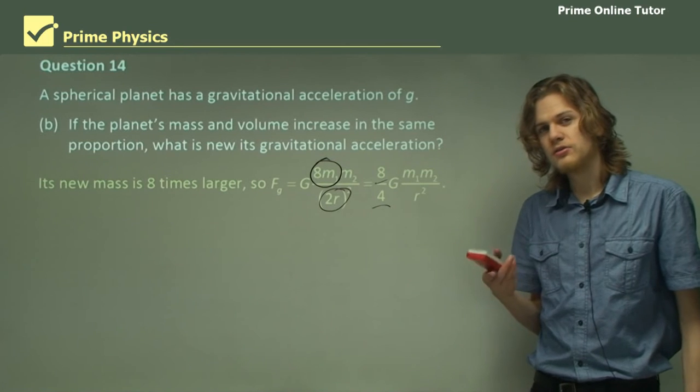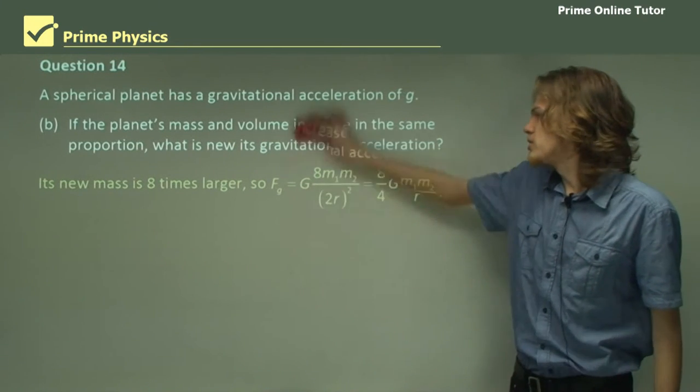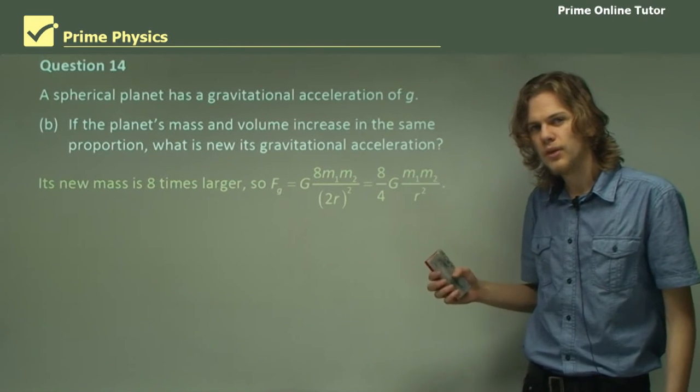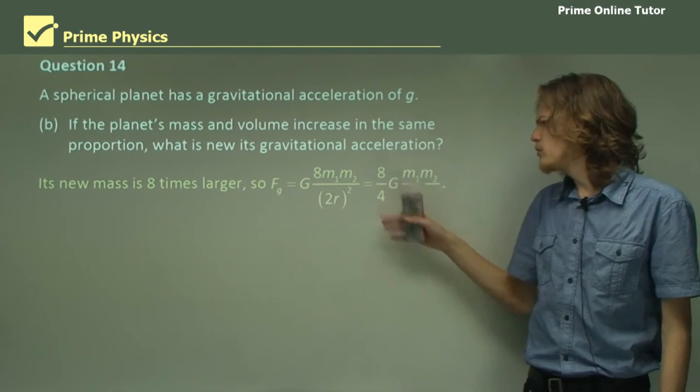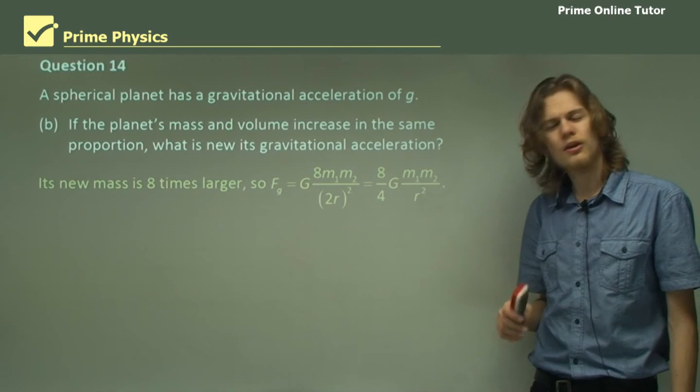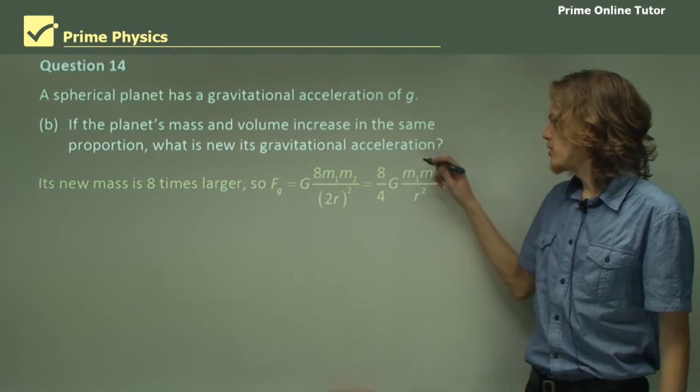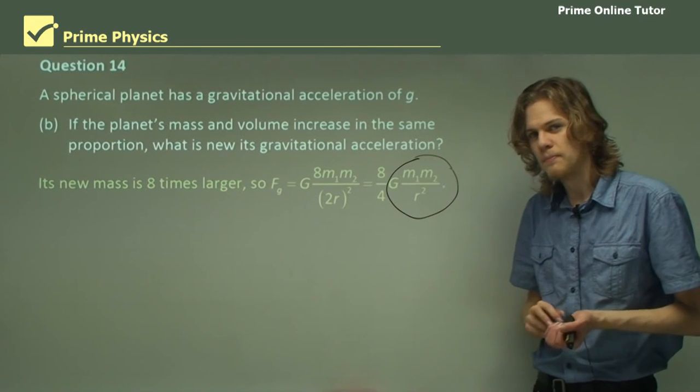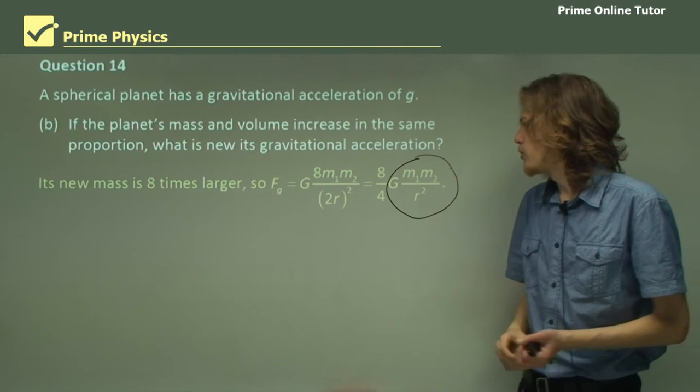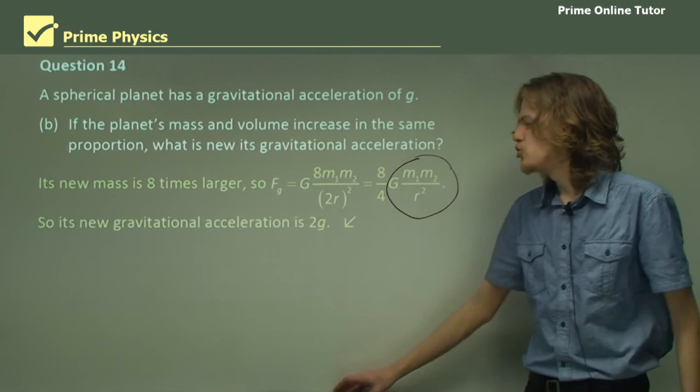The mass of the planet has increased by a factor of 8. The radius has increased by a factor of 2. So once expanding, our new equation looks like this. Now, what's 8 over 4? That's right, it's 2. Remember, this part of the equation is the original gravitational acceleration. So our new gravitational acceleration will be 2g.